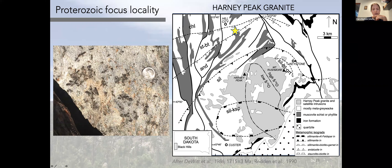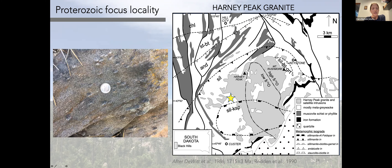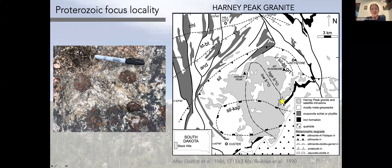Here's a geologic map of the Harney Peak Granite. The granite is shown in gray with satellite intrusions, surrounded by metasedimentary rocks that are progressively more metamorphosed toward the granite — from chlorite grade outward, through biotite, then crossing the andalusite isograd, into sillimanite, sillimanite-muscovite, and ultimately sillimanite-K-feldspar grade. This is a great exposure where you can track progressive prograde metamorphism of sedimentary rocks and the granites derived from their partial melting, with big sillimanite nodules and large garnets visible in the granites.